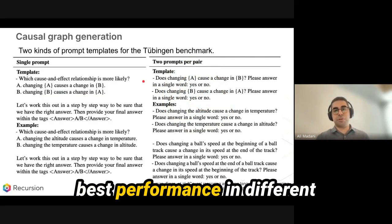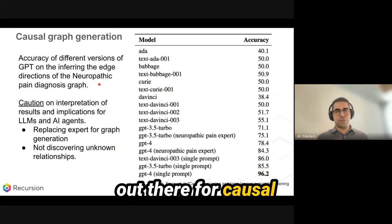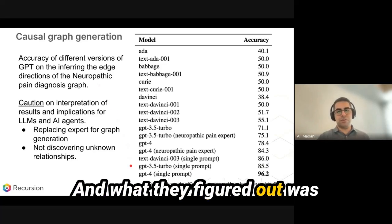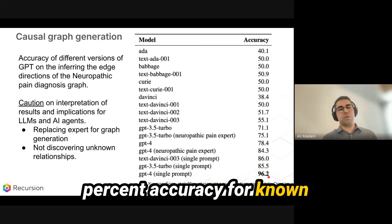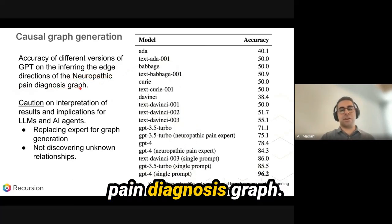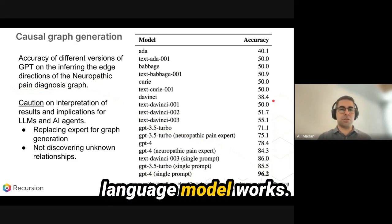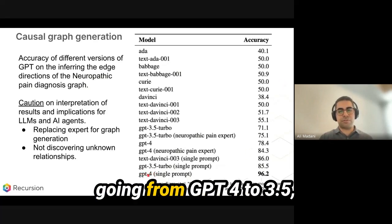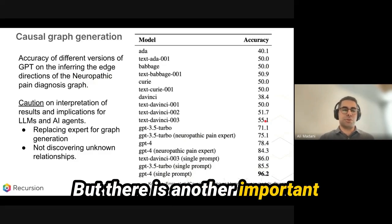A single prompt actually gave the best performance across different benchmarks. These are benchmarks available for identifying causal relationships and evaluating methodologies. At the time, GPT-4 with a single prompt achieved 96% accuracy for known pairwise causal relationships — this table is based on benchmarking for the neuropathic pain diagnosis graph. One lesson: not every large language model works equally well. Going from GPT-4 to GPT-3.5 with the same single prompting reduced performance by around 11%.